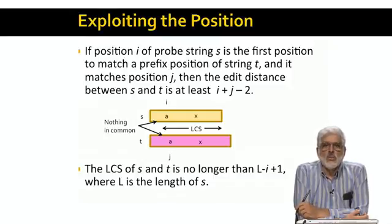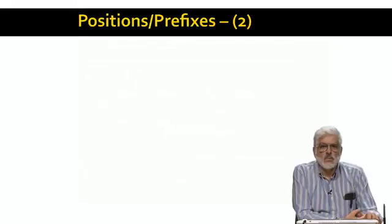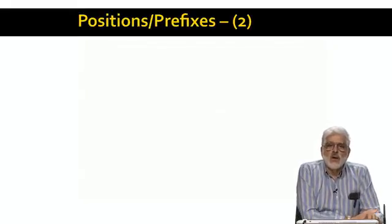That is, all but the I minus 1 symbols of S that precede the symbol A. Now we can use the lower bound on edit distance and the upper bound on the length of the longest common subsequence to figure out for each position I, what positions J of the other string could be the first match.